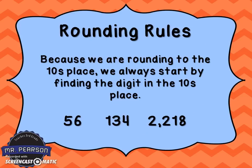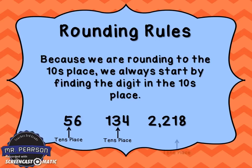Because we are rounding to the tens place, we always start by finding the digit that's in the tens place. Here in number 56, the 5 is in the tens place. In 134, the 3 is in the tens place. And in 2,218, the 1 is in the tens place.